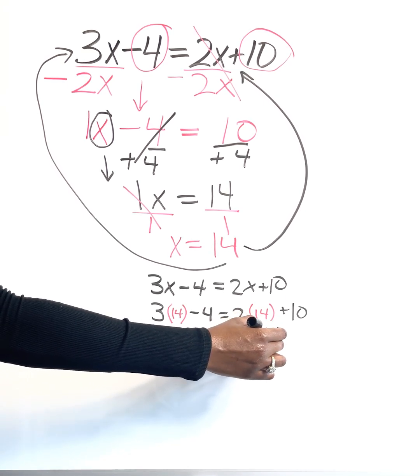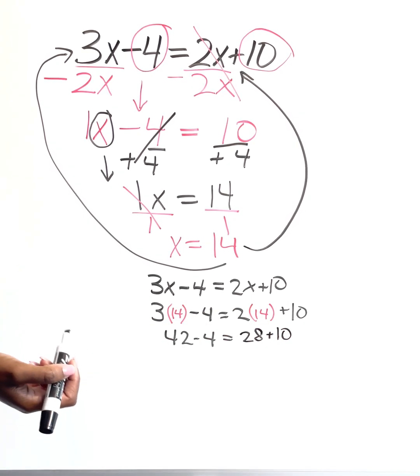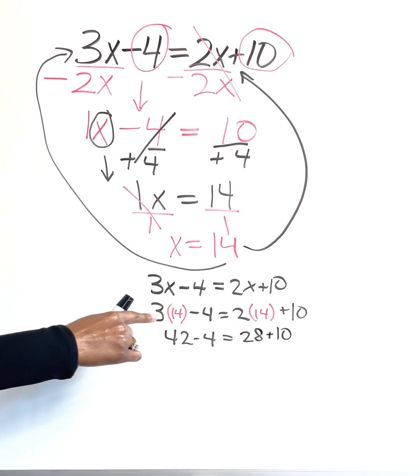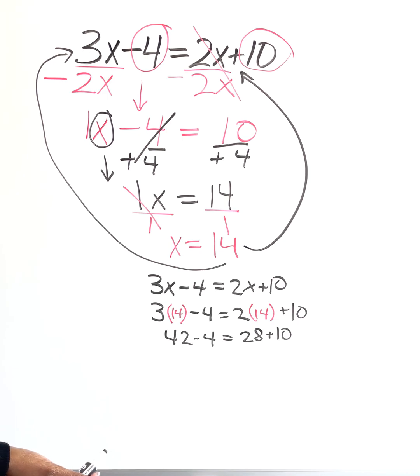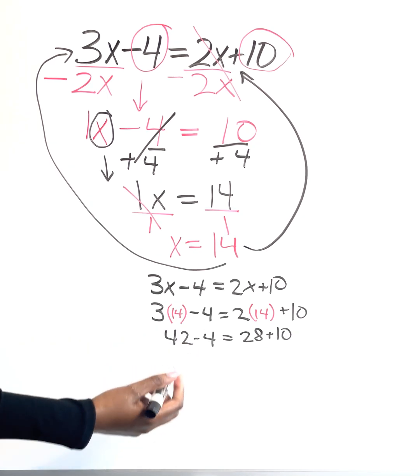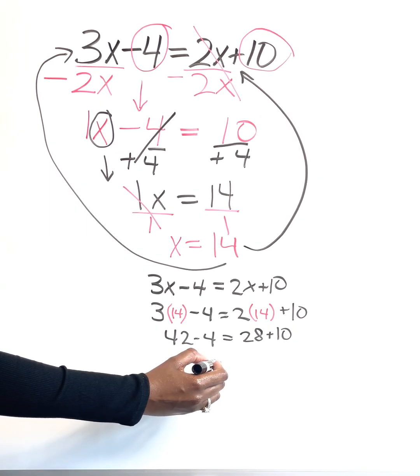And this is an example of a subskill that you need to know. You have to know your order of operations to know that you need to multiply first before you subtract it or before you add it on the opposite side. And if I do 42 minus 4, that's going to give me 38.